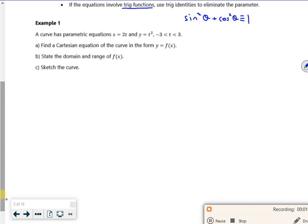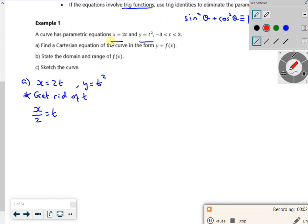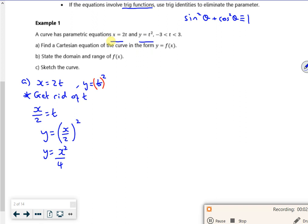Let's have a look at this one. I've got two equations: x equals 2t and y equals t squared. I want to get rid of t. The easiest one to rearrange is the x. Then I want to replace the t in y equals t squared with x over 2. So I've got y equals x over 2 squared, which is y equals x squared over 4.